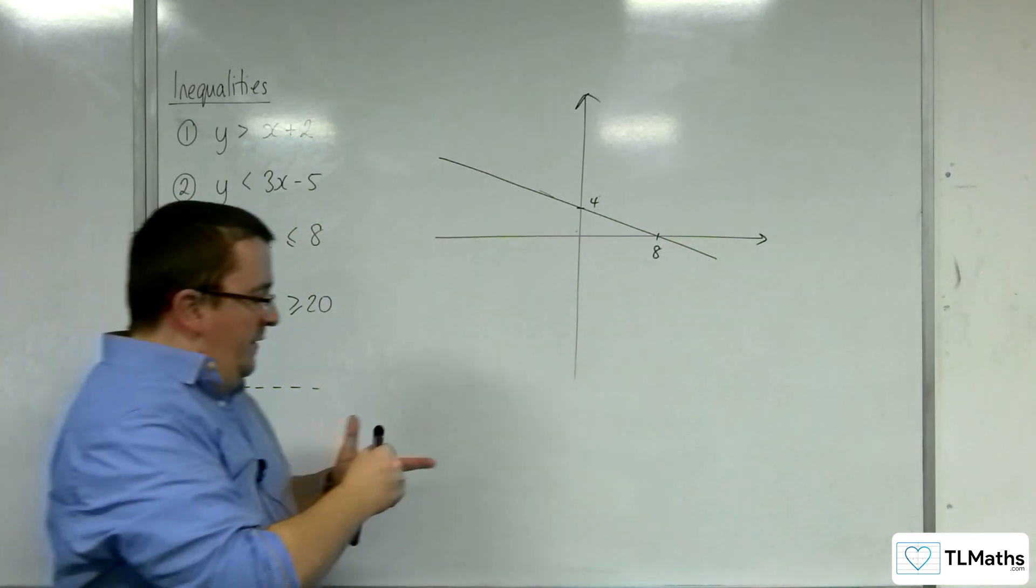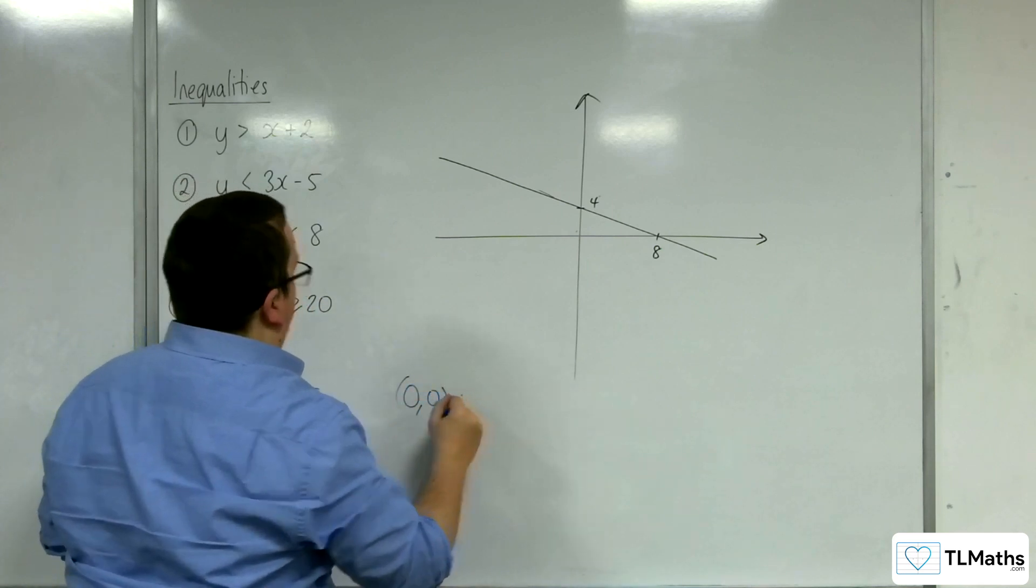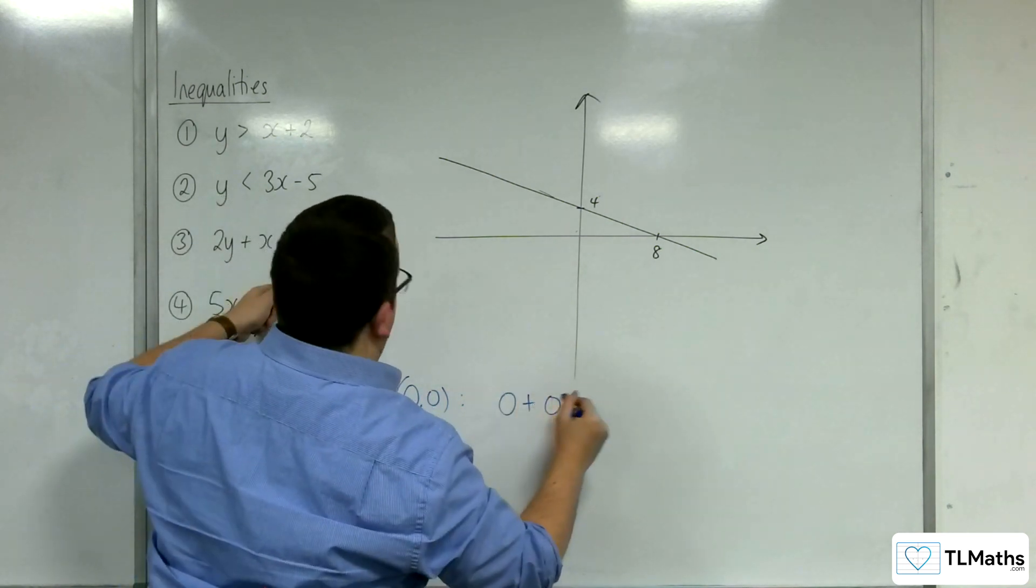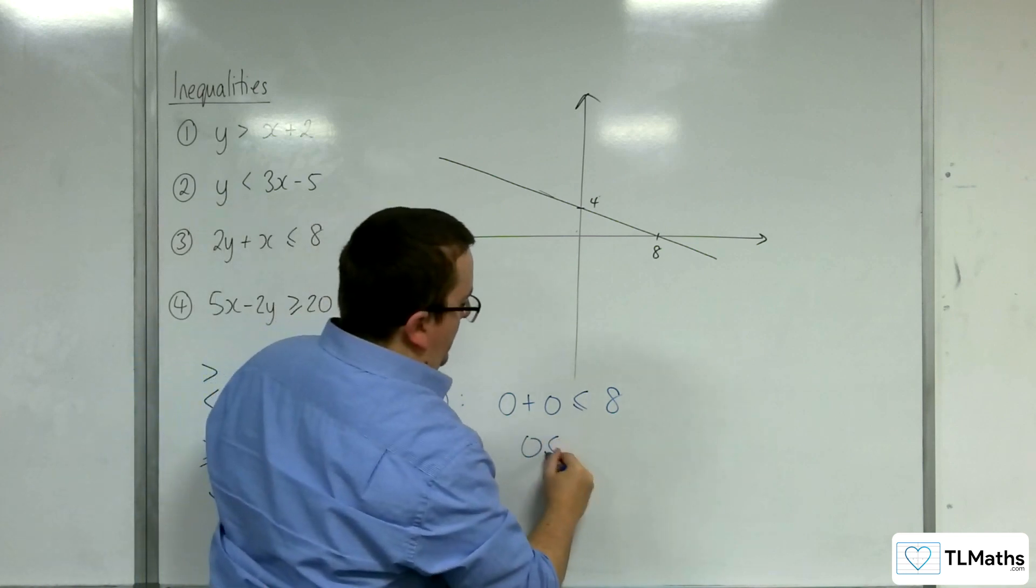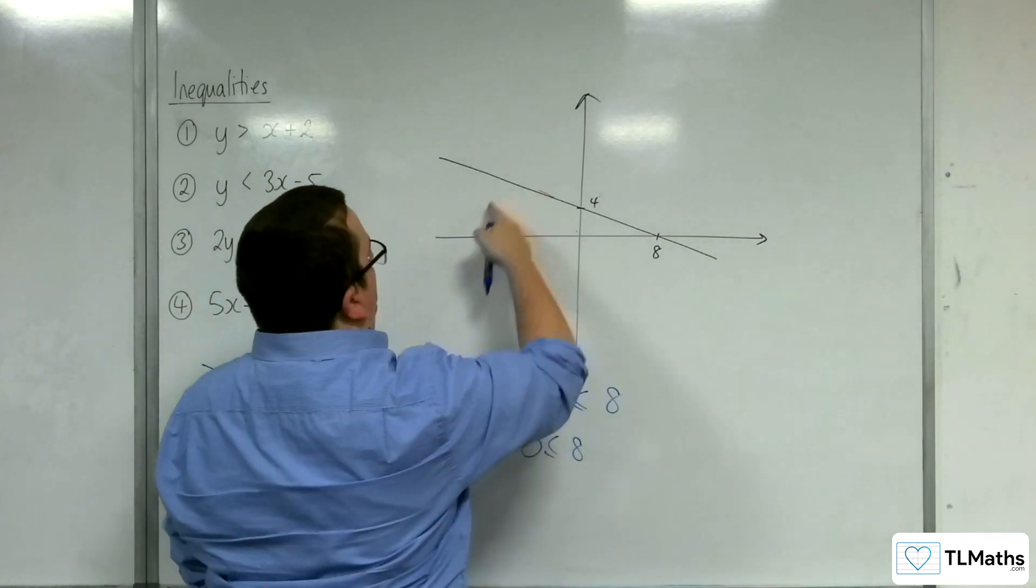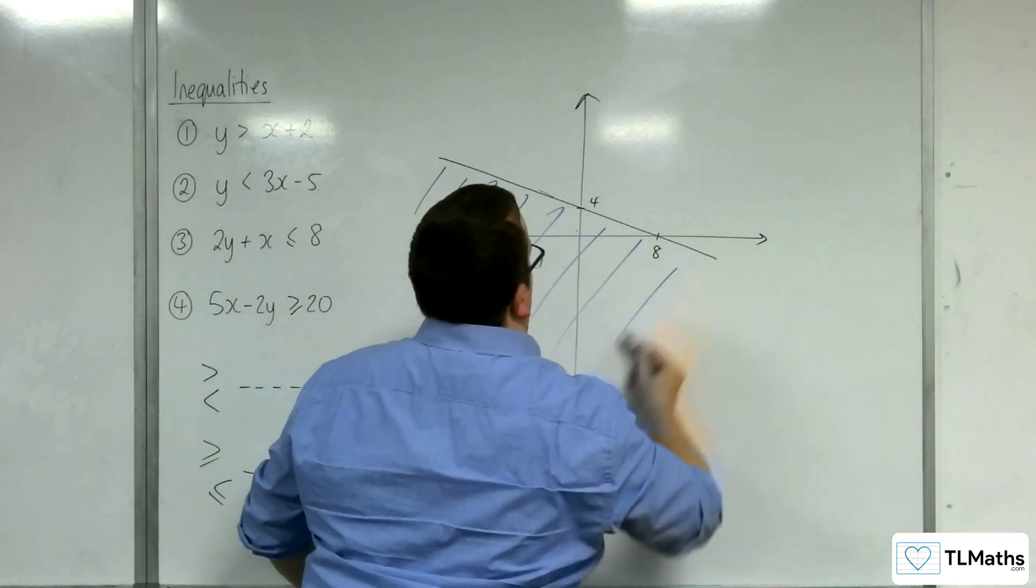So, let's try a point that's not on the line. So, 0,0. We get 0 plus 0 is less than or equal to 8. Well, is 0 less than or equal to 8? Well, yes, it is. So, that's in the region that I want. So, I want this region here. So, I'm going to shade that region.